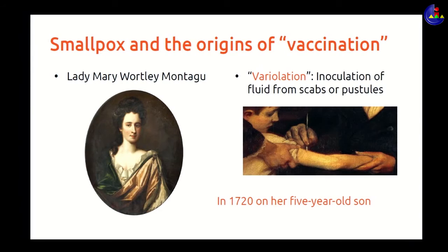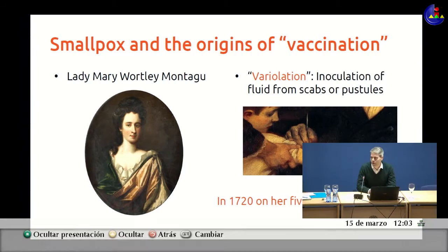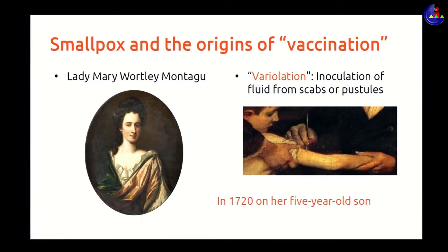The idea was that introducing that powder into the bloodstream of healthy people might protect them from future disease. She was so obsessed with smallpox that she tried this technique with her own children. She is also famous because she was a friend of the royal family in England, who decided to try this technique. They took 11 prisoners and promised them that if they survived, they would be released from prison. All 11 were released, so the technique was really successful.